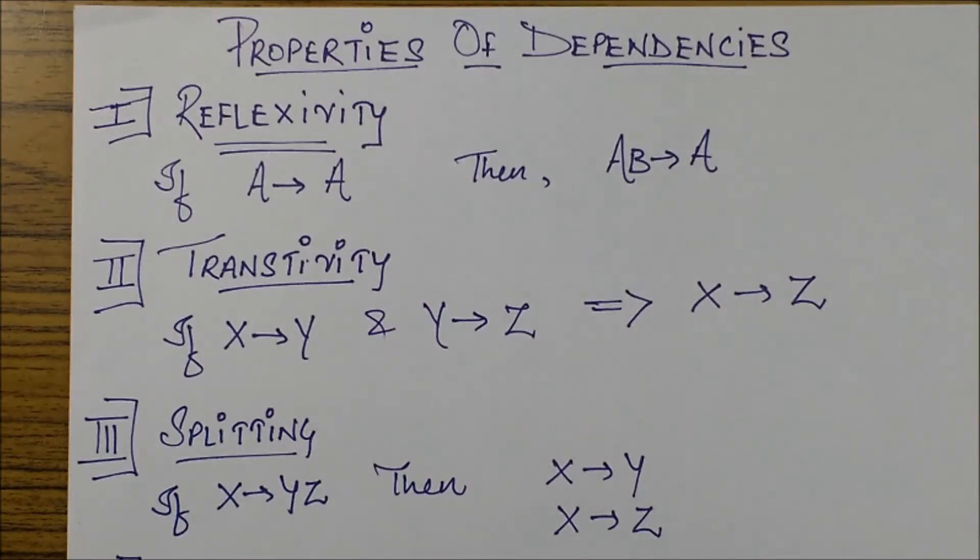Hello friends, in this session we'll deal with the properties of functional dependencies. Let's take a look at various functional dependency properties that are available. These properties are basically used when we're trying to derive some new dependencies from existing ones in order to find various closures and in various normalization or key finding questions.